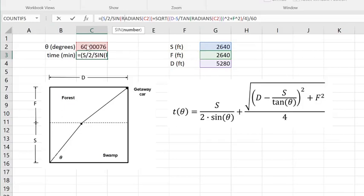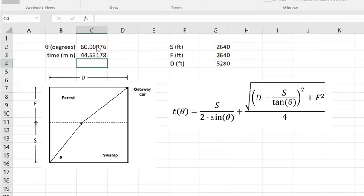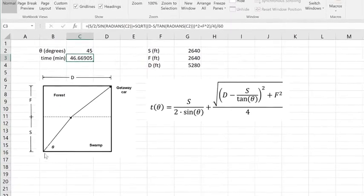But that's just the time for the given theta here that I've guessed there. And you see that when I change theta I change the time. So just like we did before there's going to be some sort of optimal angle that the escapee can choose. And that's going to determine then through this equation the time that it takes to get to the getaway car.